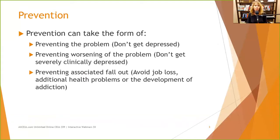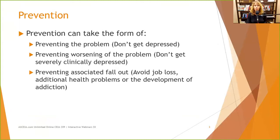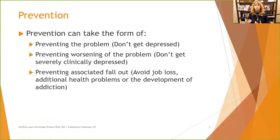Prevention can take three different forms. First, preventing the problem — helping people not get depressed at all, starting to provide skills and tools when people are young. Second, preventing worsening of the problem, so people don't get severely clinically depressed where they can't get out of bed — early intervention services and effective frontline resources. Third, preventing associated fallout: if someone gets clinically depressed, let's help them avoid losing their job, developing additional health problems, or developing an addiction to self-medicate that depression.